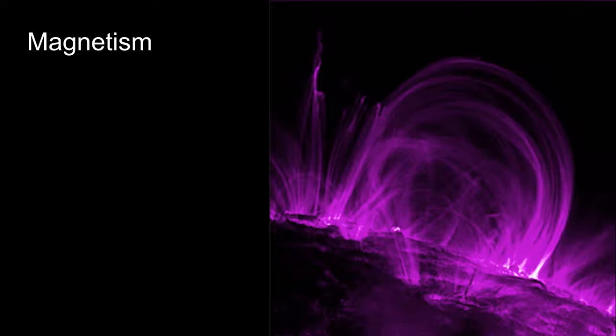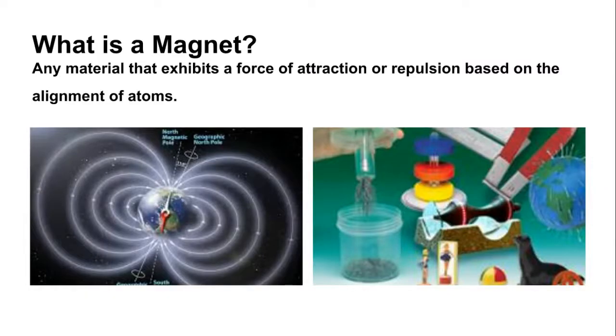Hey folks, this video is about magnetism. The first question is what is a magnet? Well, a magnet is any material that exhibits a force of attraction or repulsion based on the alignment of atoms. So basically it's a material whose atoms are lined up in a certain way that it's putting out a magnetic field that can attract or repel other objects.